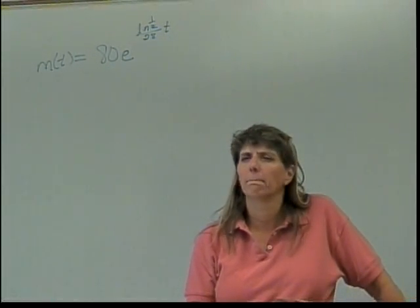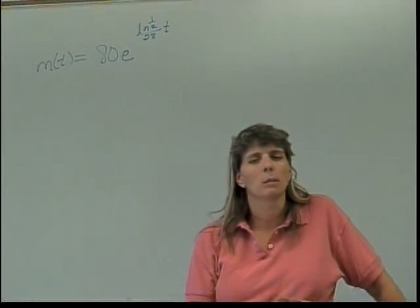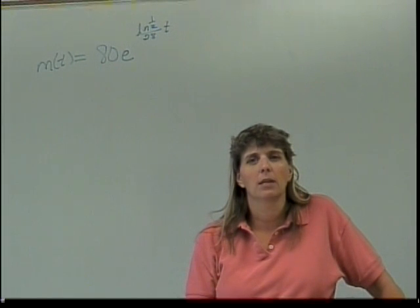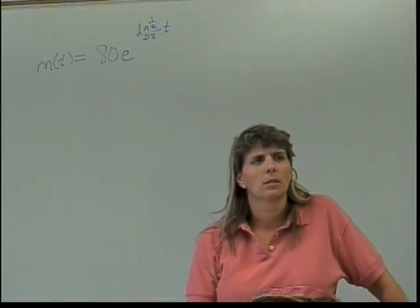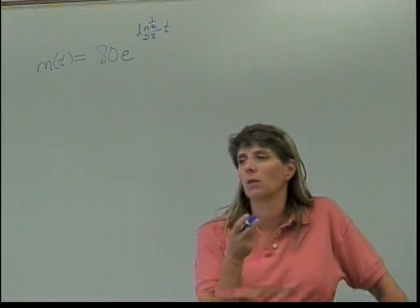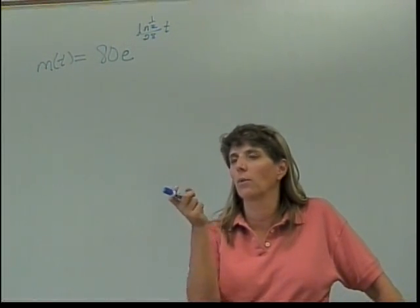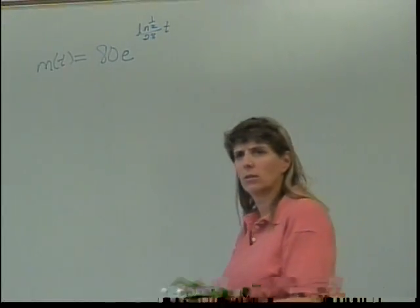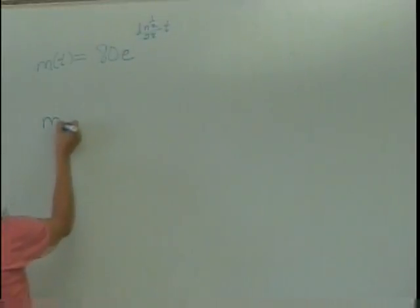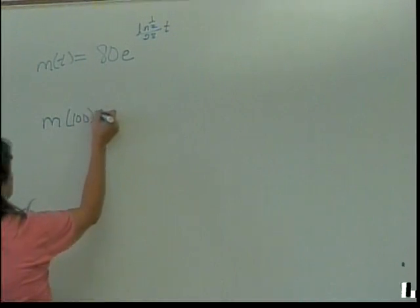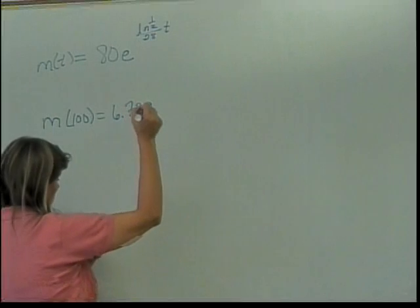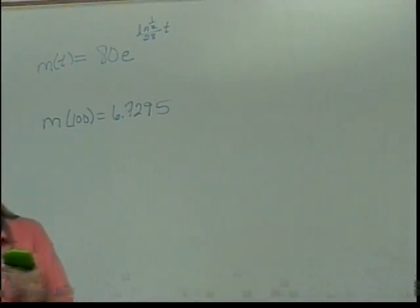I was like there's no way I can have 67 left. I've been through more than one half-life in 100 years. So what'd you get? Something's wrong with that. Anybody else got an answer? I got 6.729. Anybody else agree with that? Is that a reasonable answer? And how do I know?